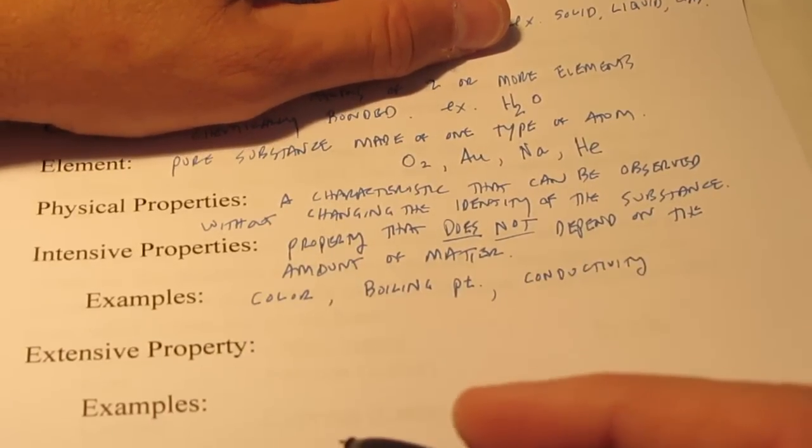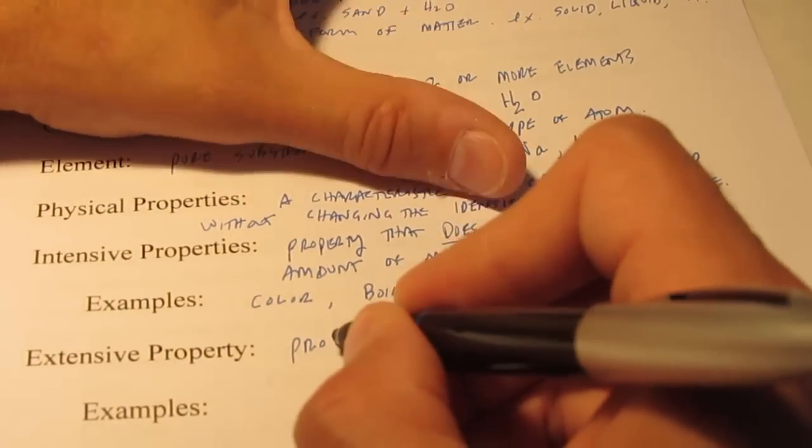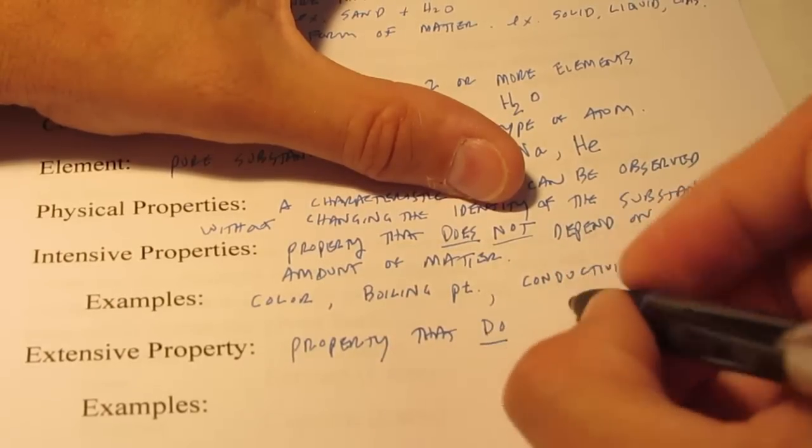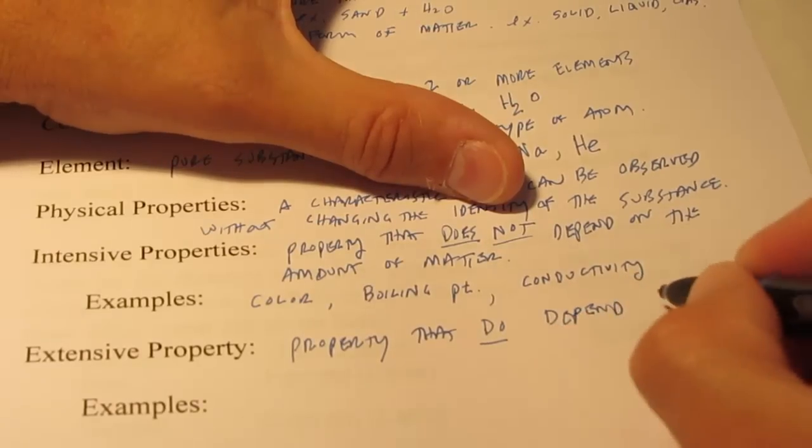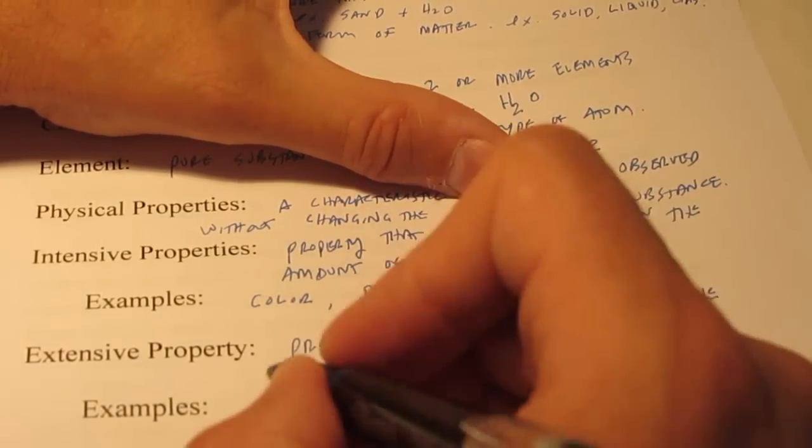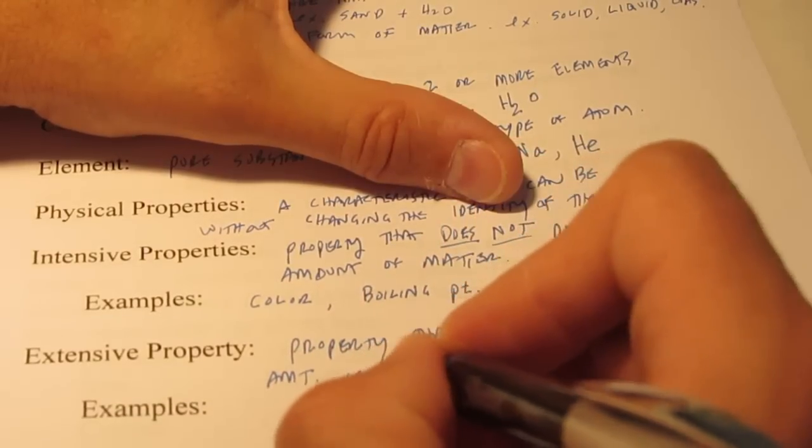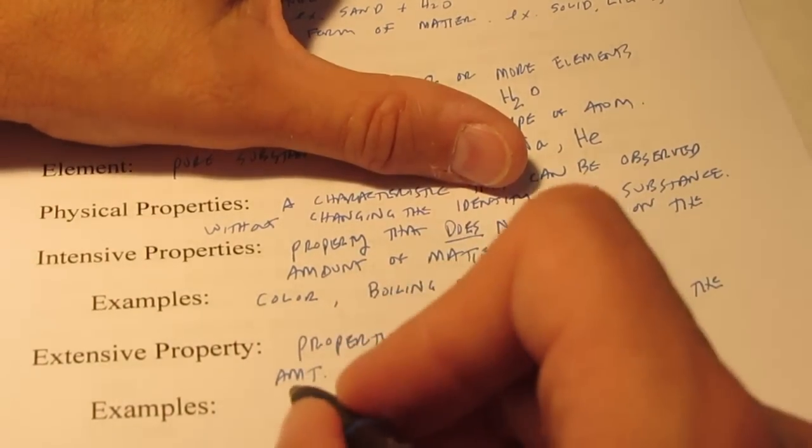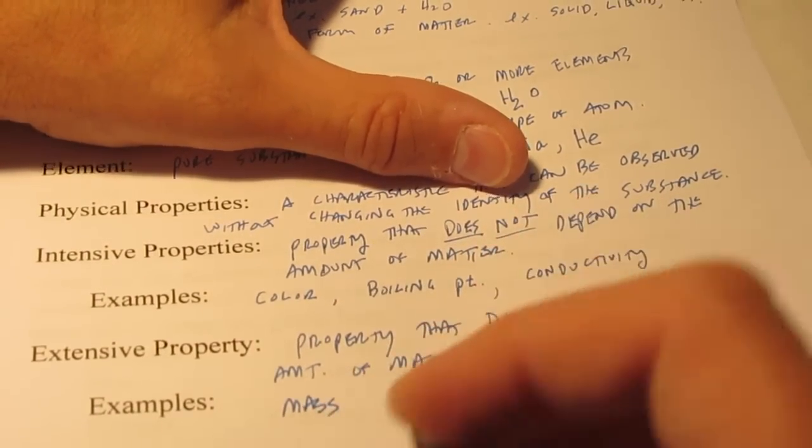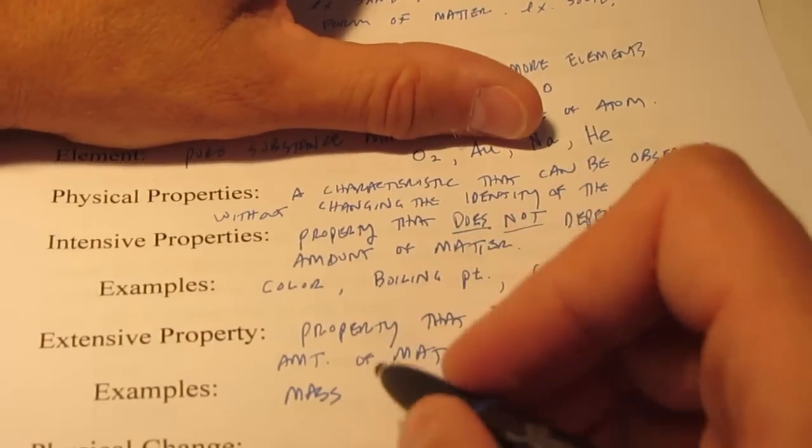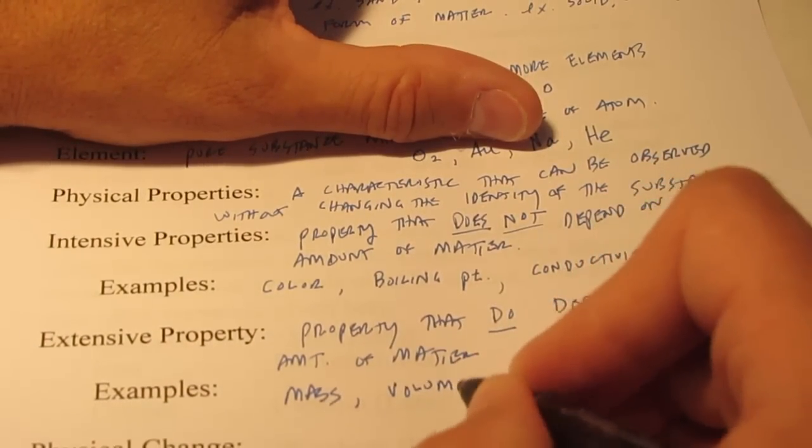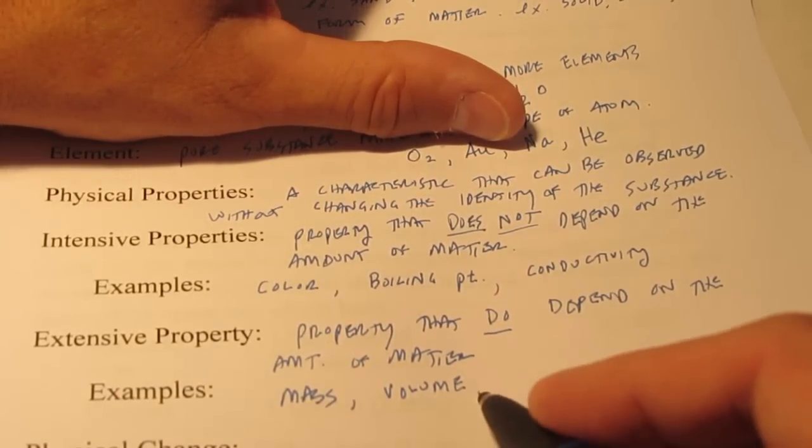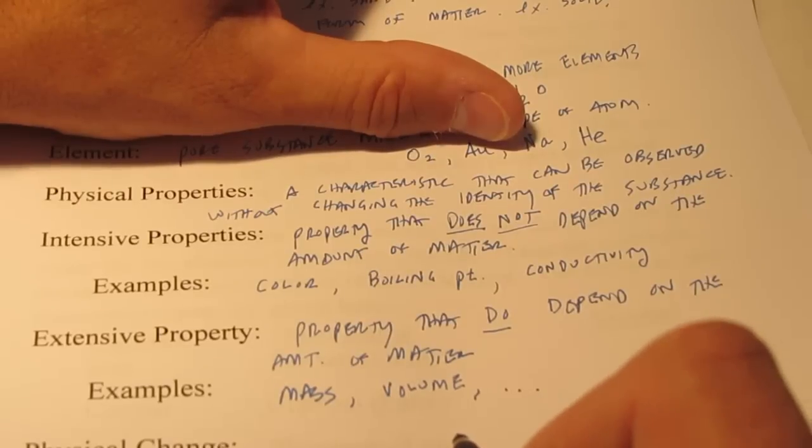Well, guess what extensive properties are? Extensive properties are properties that do depend on the amount of matter. Can you think of a couple of extensive properties? How about mass? Certainly mass depends upon the amount of matter that's present. How about volume? The amount of space something takes up. That certainly depends upon how much matter is present. See if you can think of a couple of other extensive properties on your own.